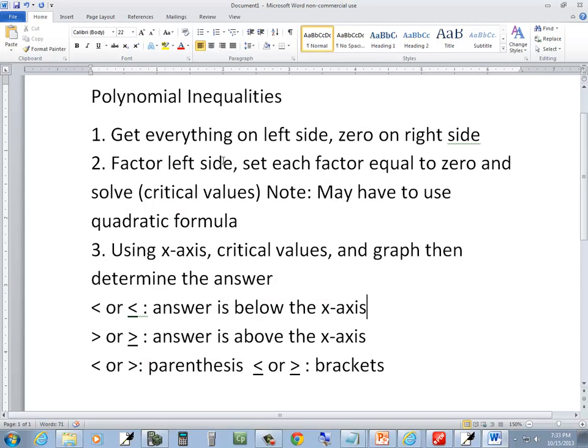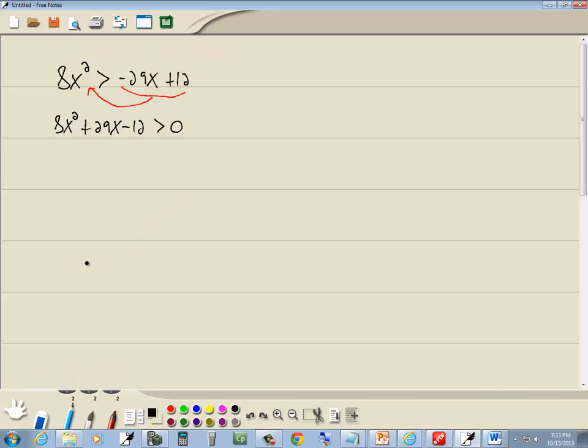Now step 2 is to factor the left side. Set each factor equal to zero and solve. These are critical values. Does this factor? I'm not sure if I actually see this one. So this is a key number. Let me write that down.